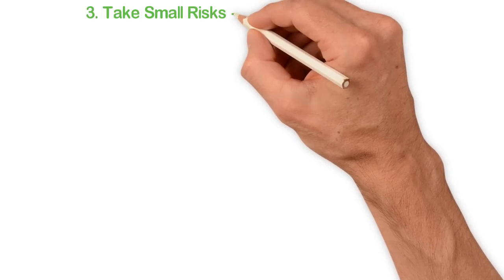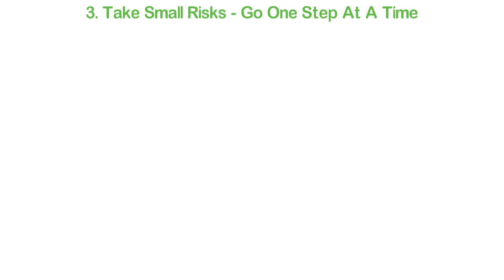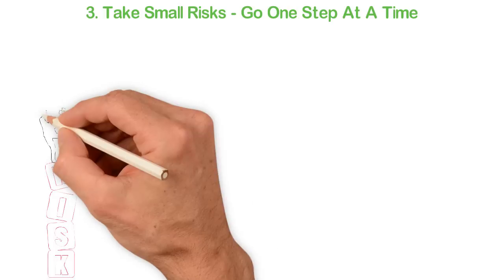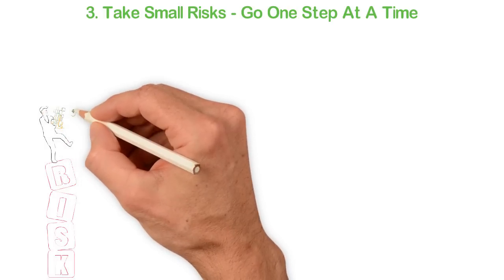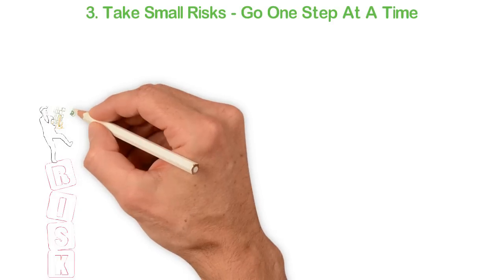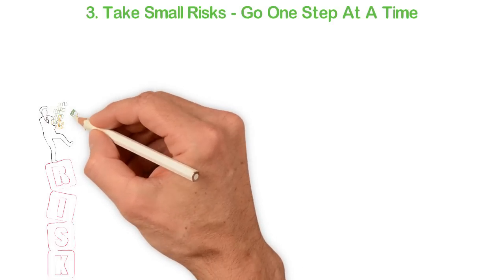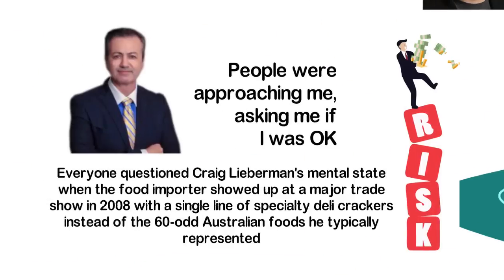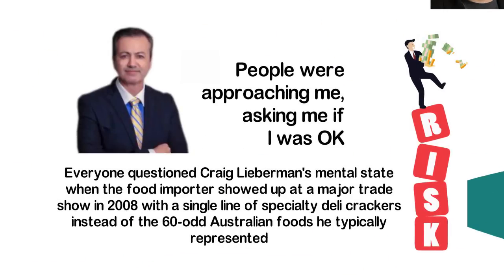Number 3: Take small risk. Go one step at a time. Start one step at a time. Conquer your fear of failure by starting with smaller risks that do not involve excessive losses. Then you can begin attempting bigger risks as you grow and learn. Remember our friend Liberman, the food importer who was ready to streamline production at his bakery to a single line of specialty deli crackers?